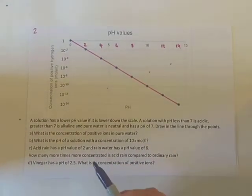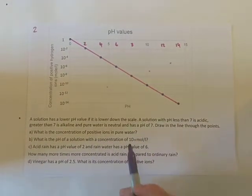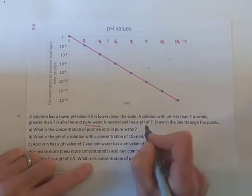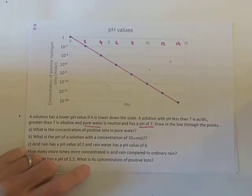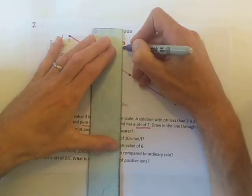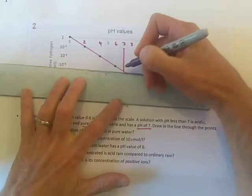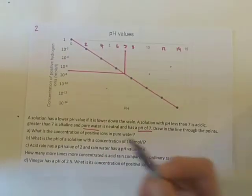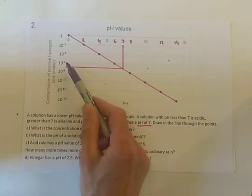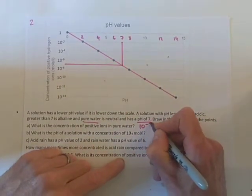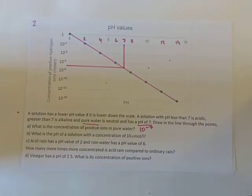The first part asks for the concentration of positive ions in pure water. We're told pure water is neutral and has a pH of 7. I'll draw the lines in to help read it off accurately. That's halfway between 10 to the minus 6 and 10 to the minus 8, so that's 10 to the power of minus 7 positive hydrogen ions.